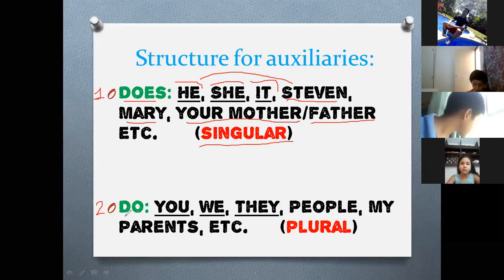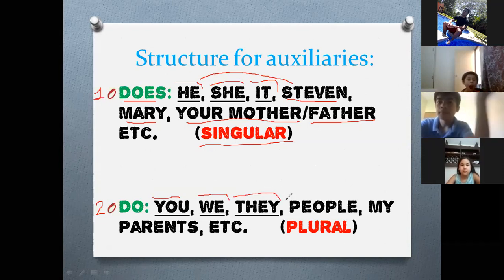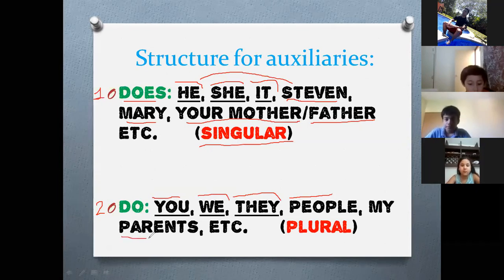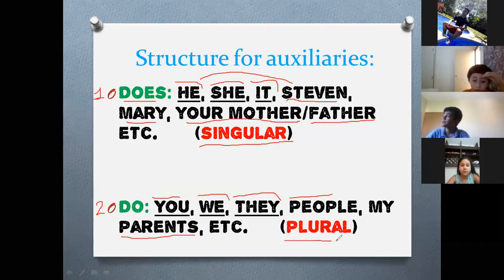The second auxiliary: use 'do' exclusively for 'you,' 'we,' 'they,' and people in plural — like four people, 15 people, or 'my parents.' Parents means both of them, so that is plural. They are plural nouns. Use 'do' only for plural nouns.